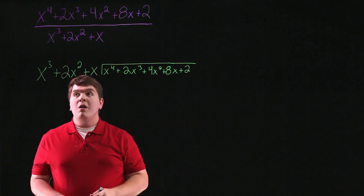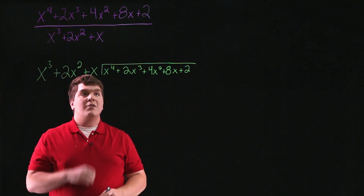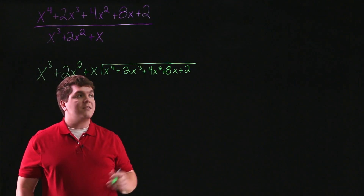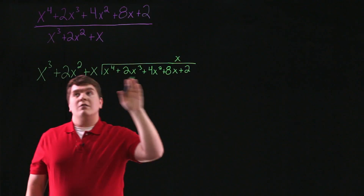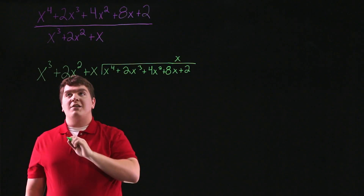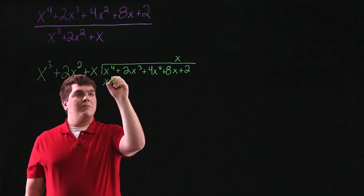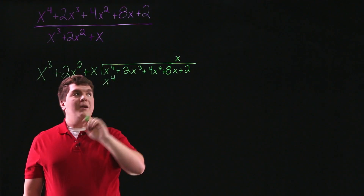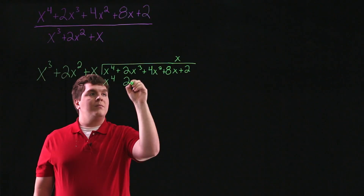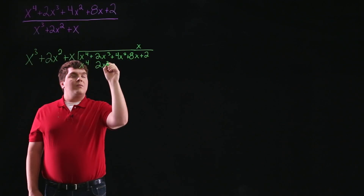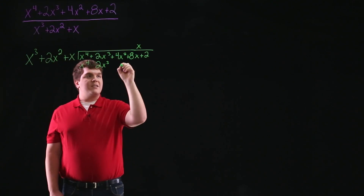Now from here we want to see what we can multiply x cubed by to obtain an x to the fourth, and in this case it's just x. So multiplying x cubed by x we have x to the fourth. Multiplying 2x squared by x we have 2x cubed. And multiplying x by x, we have x squared.